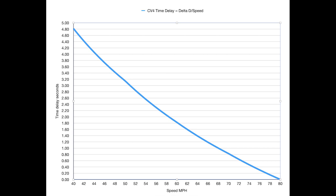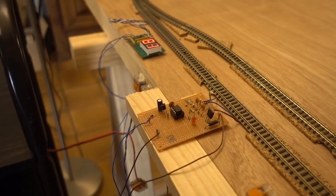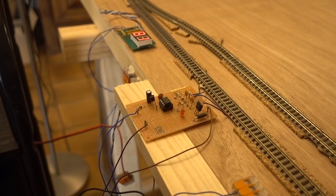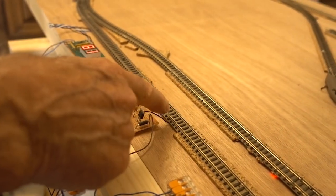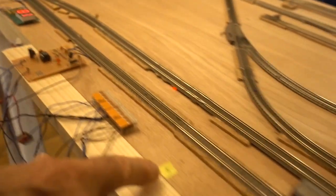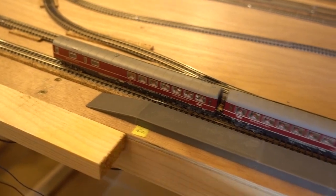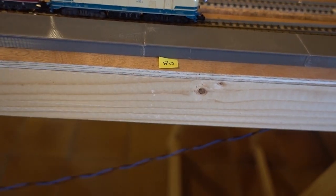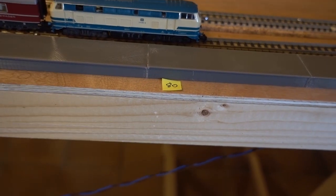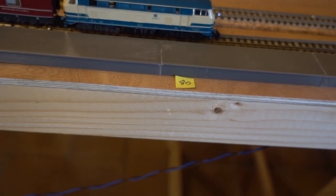When the speed of the train has been established, a lookup table is used to set the appropriate delay. In order to calculate the delay before the asymmetric DCC switches in, I timed the stopping distance between the trip point and the stopping point at 40, 60, and 80 miles an hour. From those values I deduced the delays that were needed before the asymmetric DCC switched in.